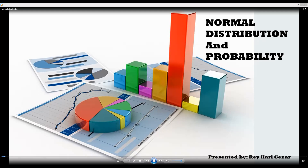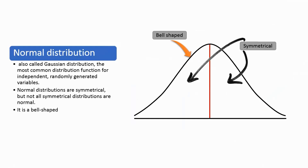Good morning. My topic is all about normal distribution and probability. Let us define what normal distribution is. Normal distribution is also called the Gaussian distribution — the most common distribution function for independent, randomly generated variables. These variables are spread based on a range of scores or values, with most values found at the middle. Normal distributions are symmetrical, but not all symmetrical distributions are normal.